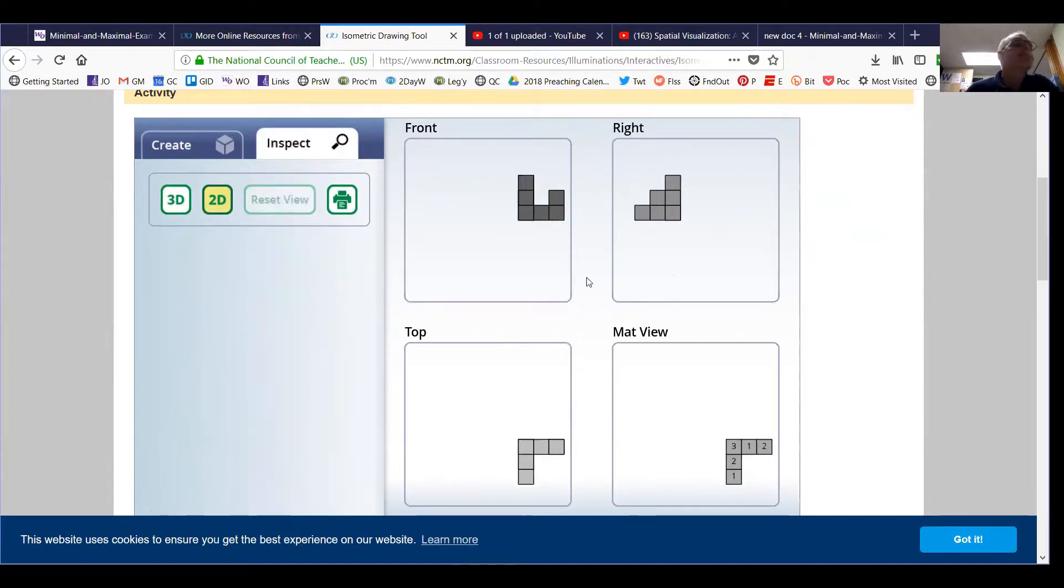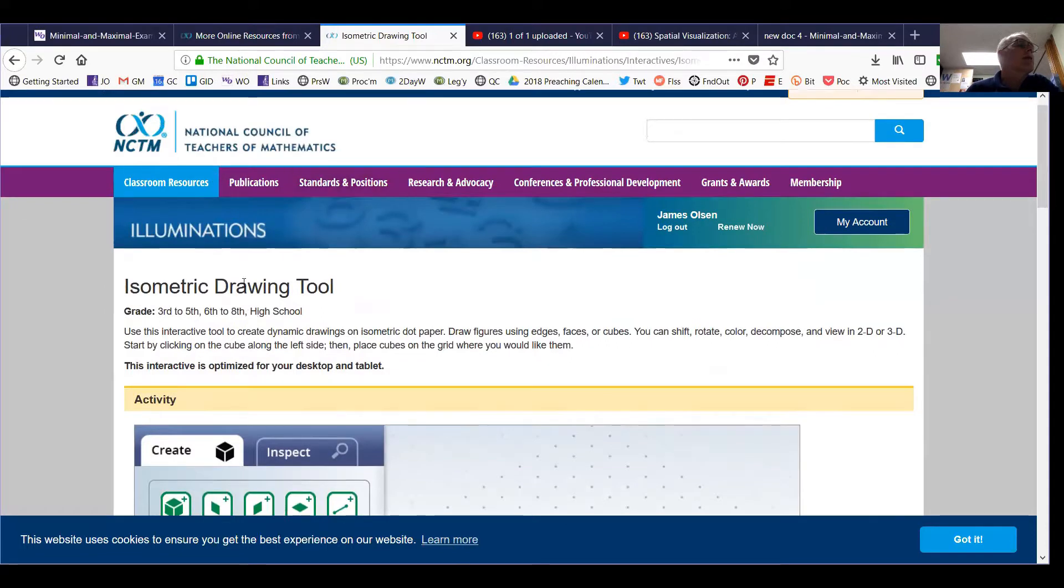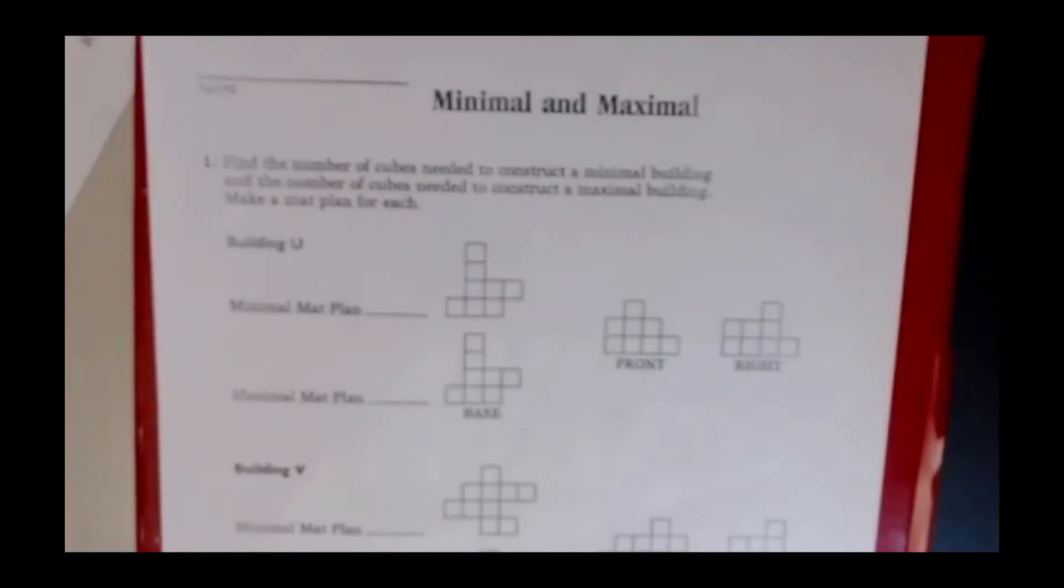So I think the isometric drawing tool from NCTM illuminations is a good interactive app however it's doing most of the work for you and you may not fully understand. So you've got to get in with some dot paper and get dirty and practice on your own. Now I'd like you to download the minimal and maximal handout.